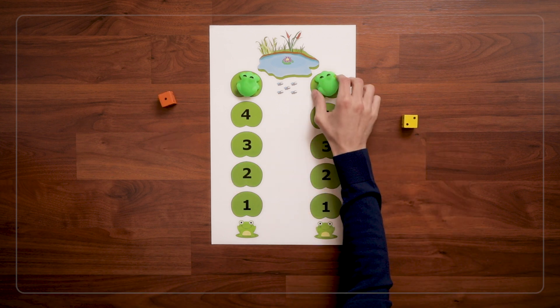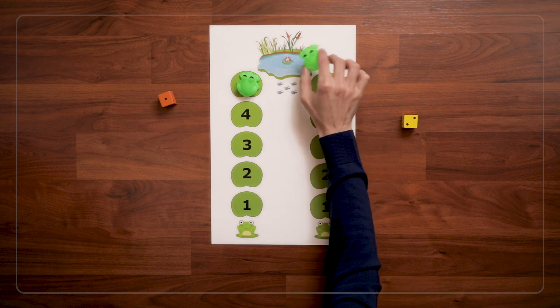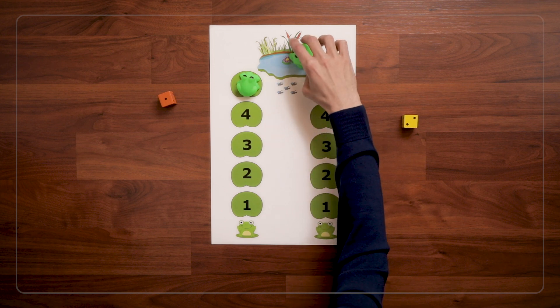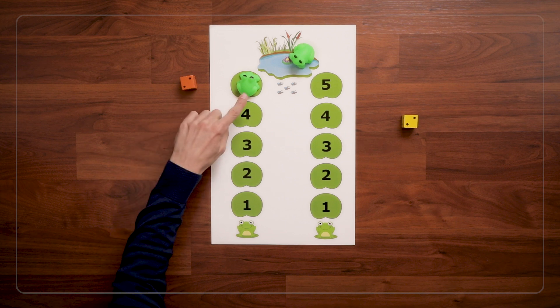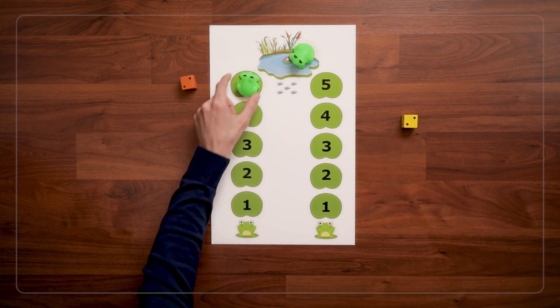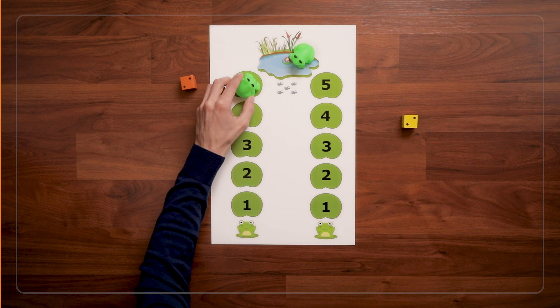And kids can swim around with their frog in the pond. You can play that you need to land exactly on the pond, or that even with a roll greater than what you need, you still get to the pond. It's up to you. Feel free to change the rules or make up your own rules along the way.